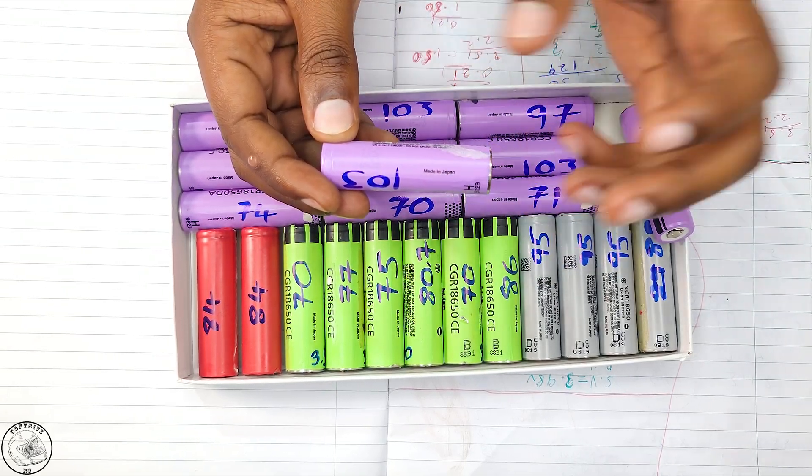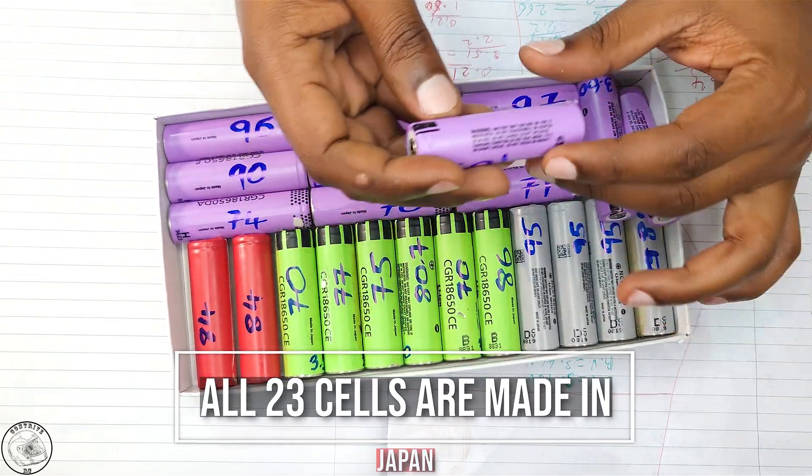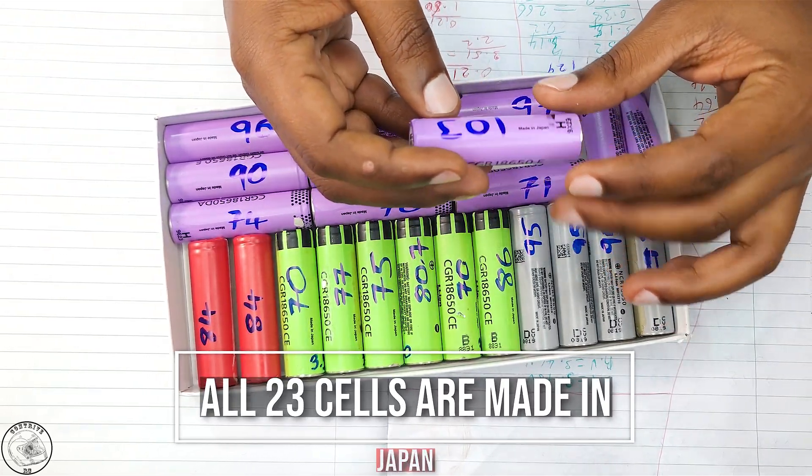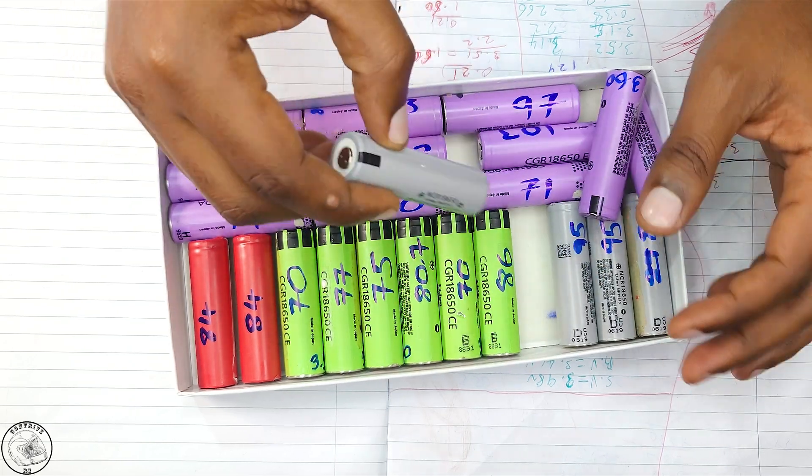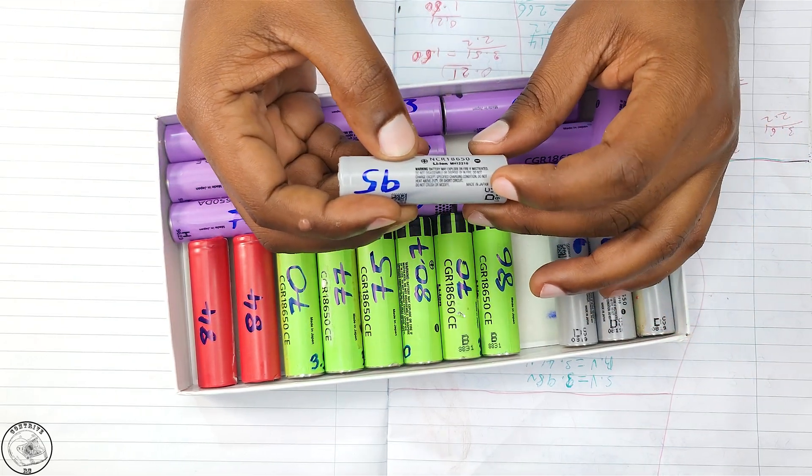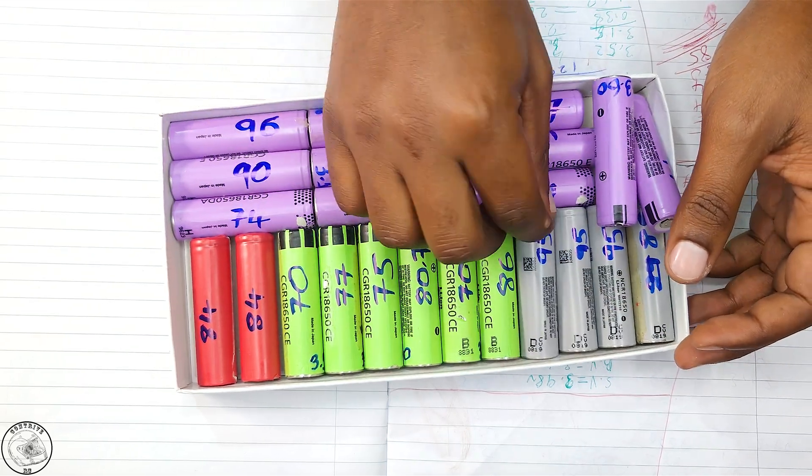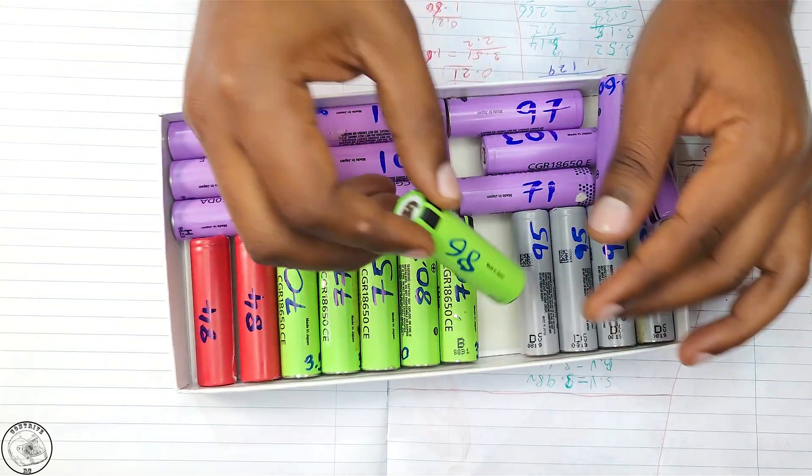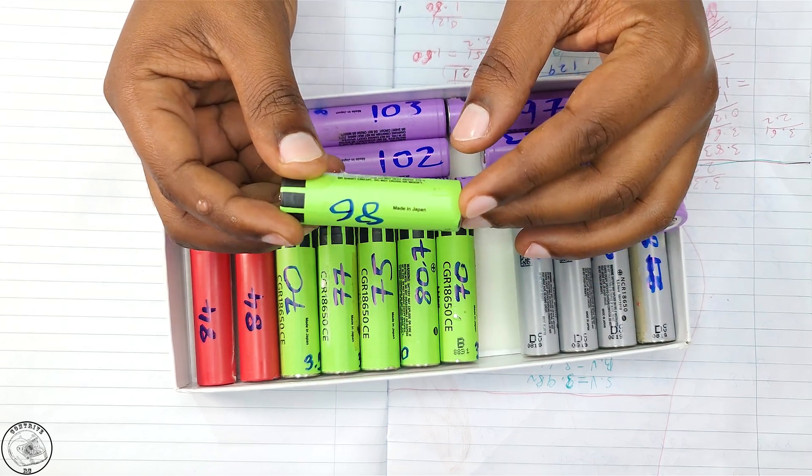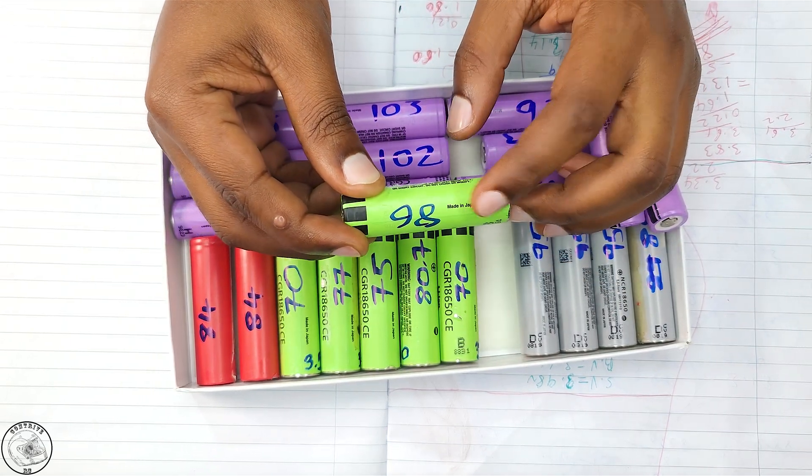A particularly interesting observation is that all 23 cells that passed testing were harvested from Japanese laptop batteries. They're primarily from two manufacturers: Panasonic and Sanyo.